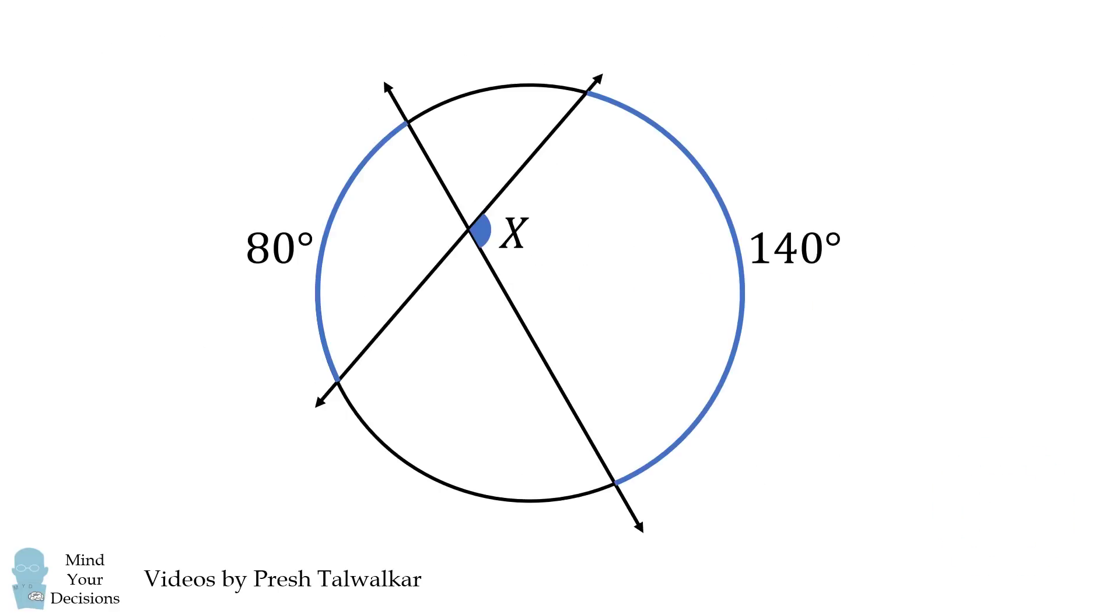So how can we solve this problem? The key is constructing a chord of the circle between the two intersecting lines. Let's see why this helps.